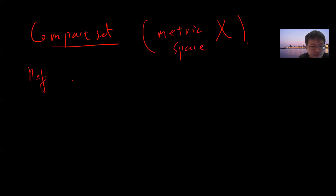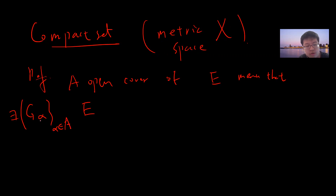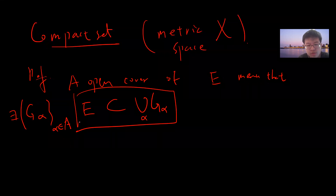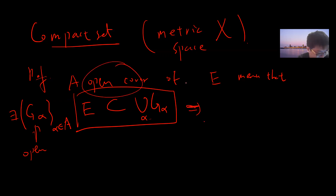So, definition. We first define open cover. Let's take a subset E of X. An open cover of E means that there exists a collection of open sets G_alpha such that E is a subset of the union of G_alpha. The index set A can be countable, uncountable, or whatever — it can be arbitrarily large. If E can be written as a subset of the union of these open sets, this is called an open cover.